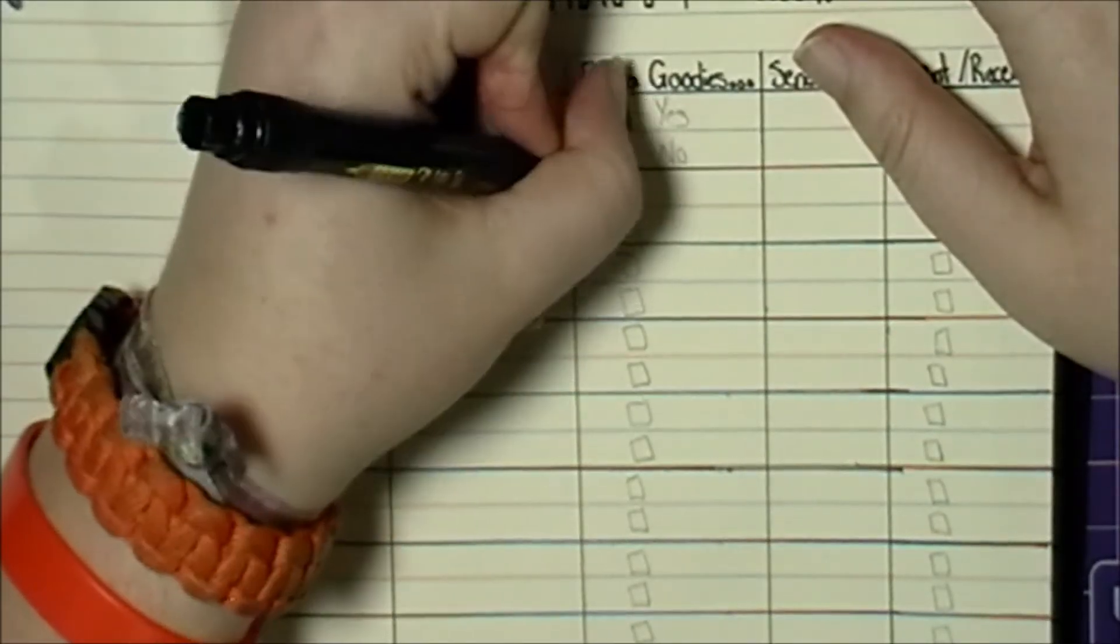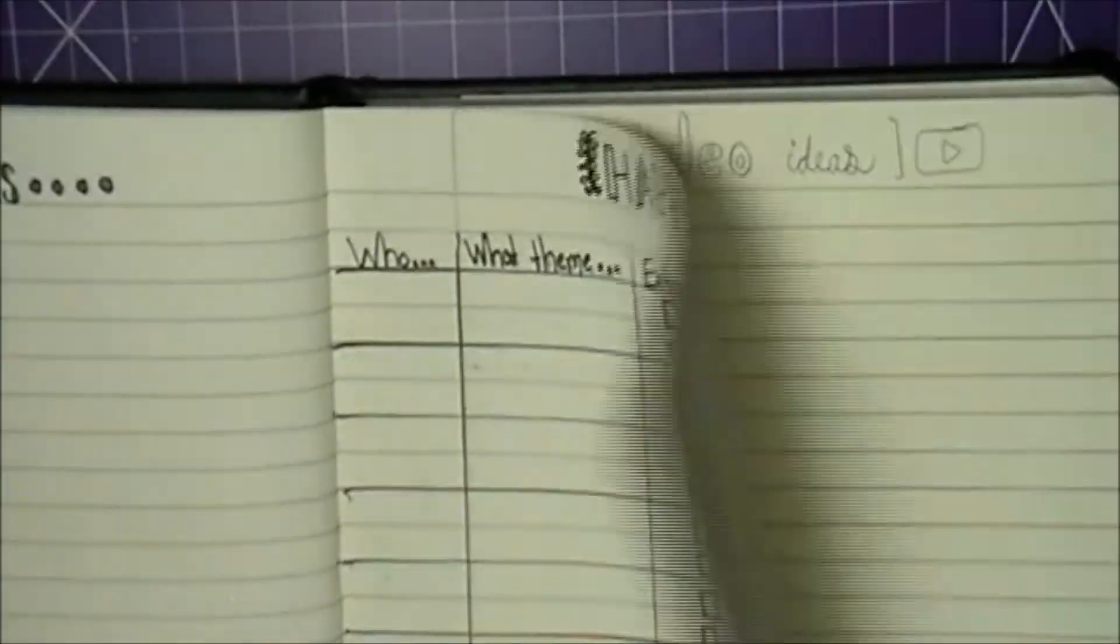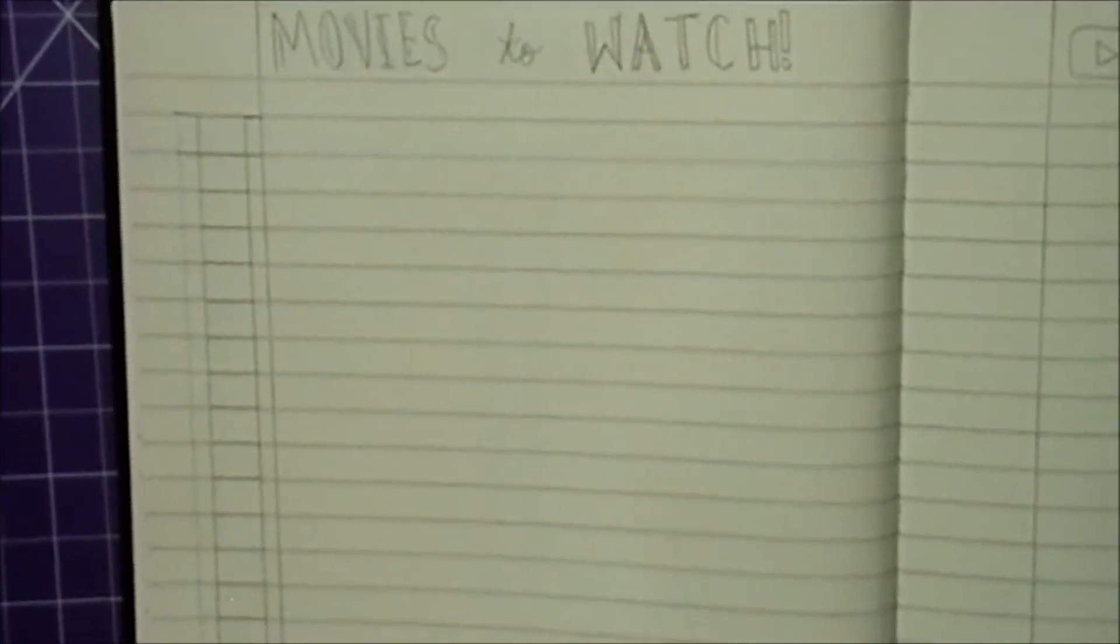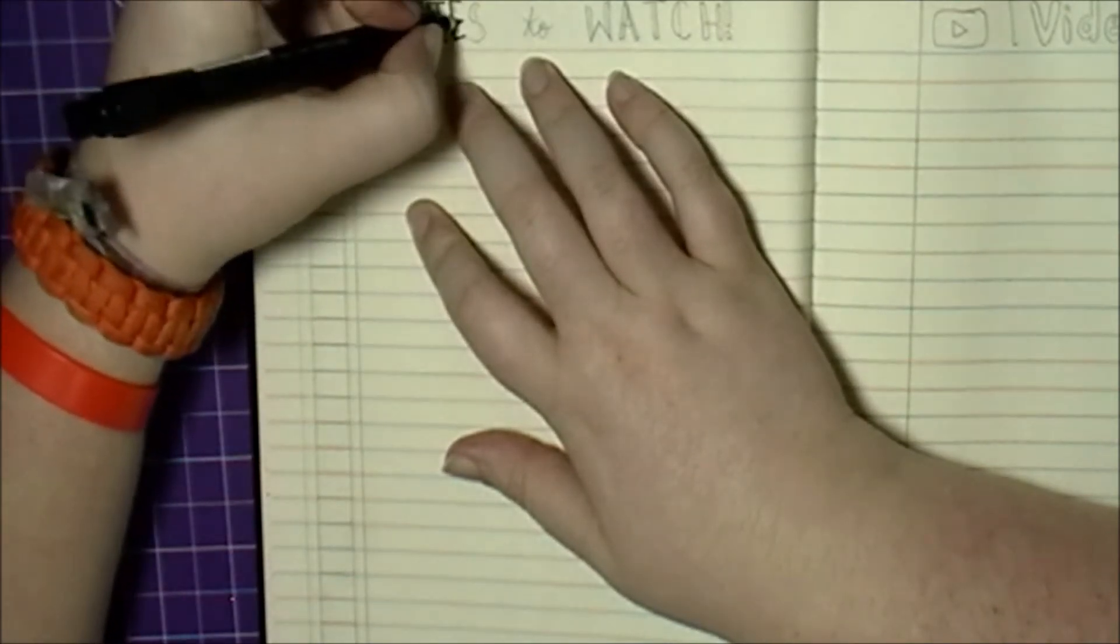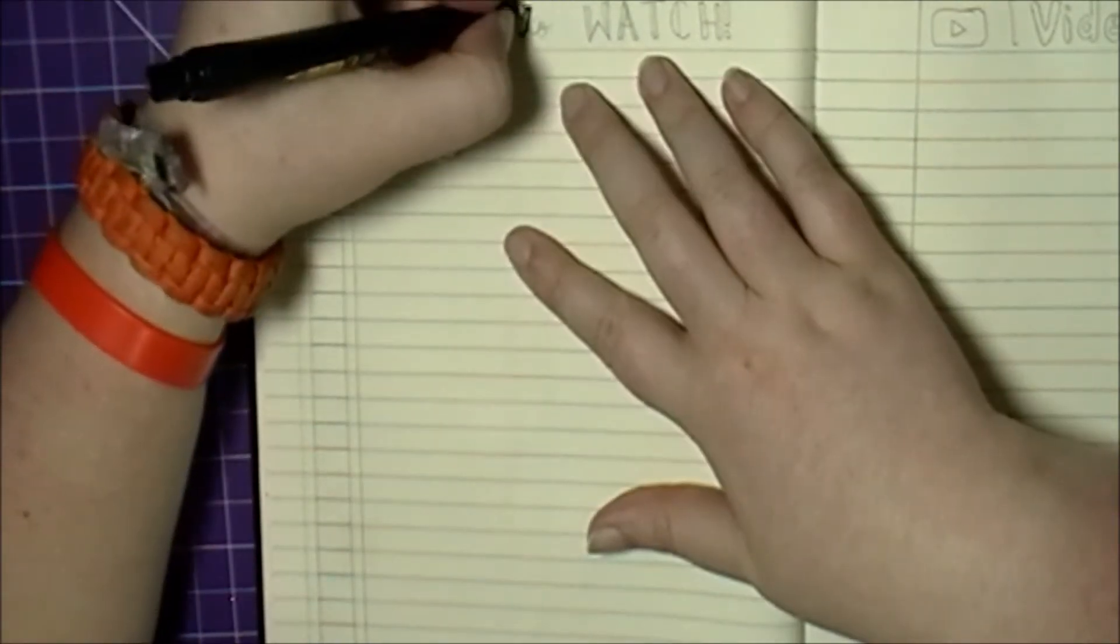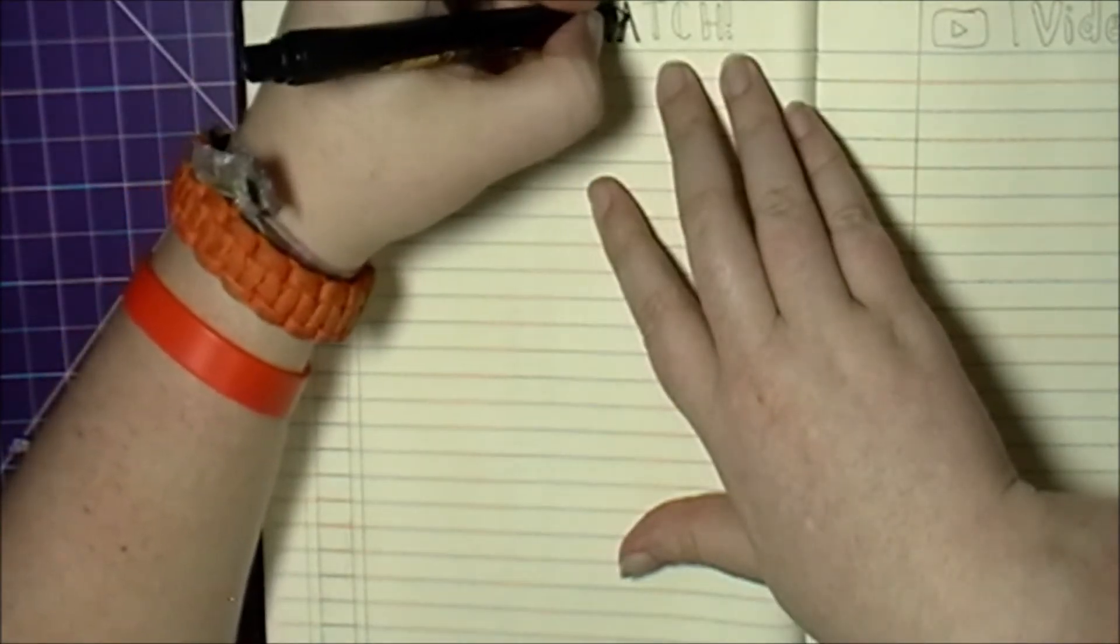The categories on top that I wrote in were who bought, theme, extra goodies, sent by, and sent and received. And now moving on to my movies to watch list.